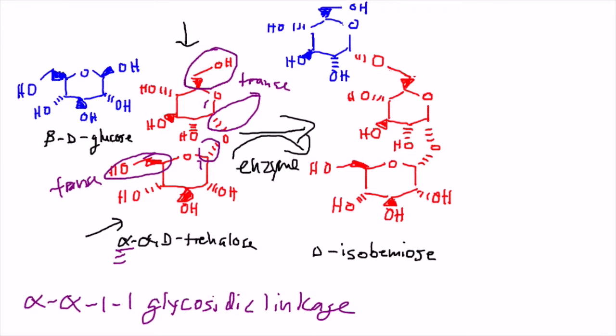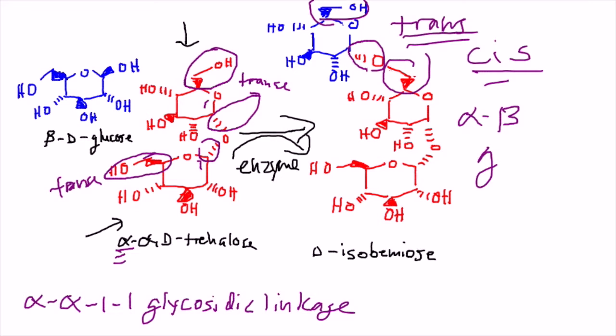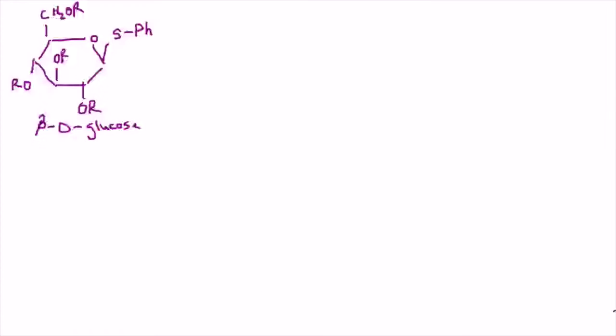Now, let's classify the glycosidic linkage in isobemios. We have that same trans relationship we saw in treehalos, but when you look at the second half of the glycosidic bond, it appears to be cis. So, we have an alpha-beta-1,6 glycosidic linkage. Excellent. We know how to differentiate between different glycosidic linkages. Let's get down to the mechanism by which they are formed.